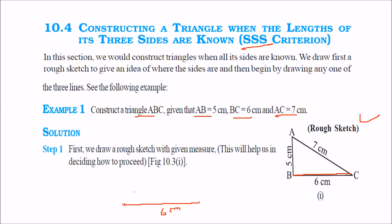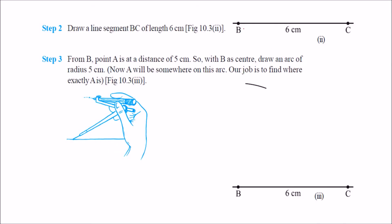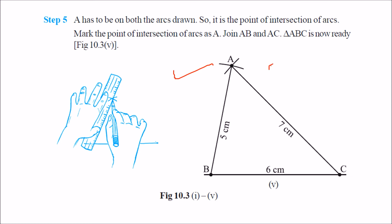Place your compass point at B with distance 5 and cut an arc. Then take distance 7 from C and cut another arc. The point of intersection is vertex A — just join it. This is your required triangle. So: first make BC = 6, then with radius 5 from B cut an arc, then with radius 7 from C cut an arc, and join the intersection point to get the triangle.